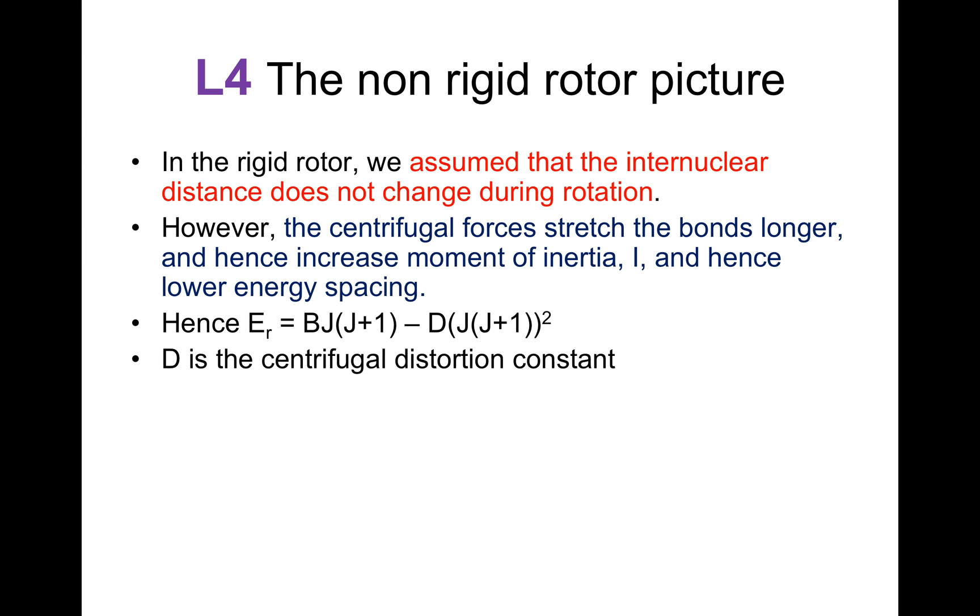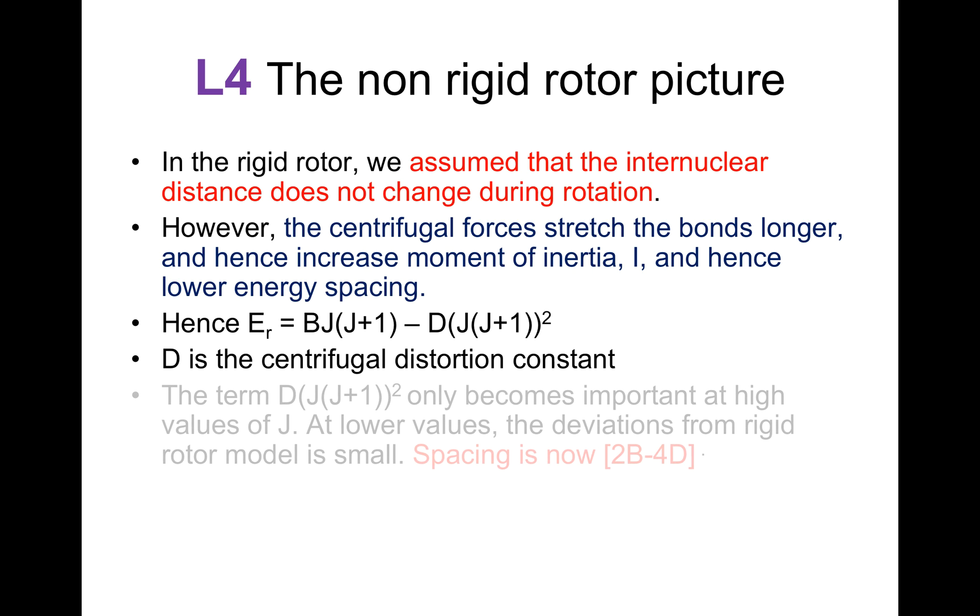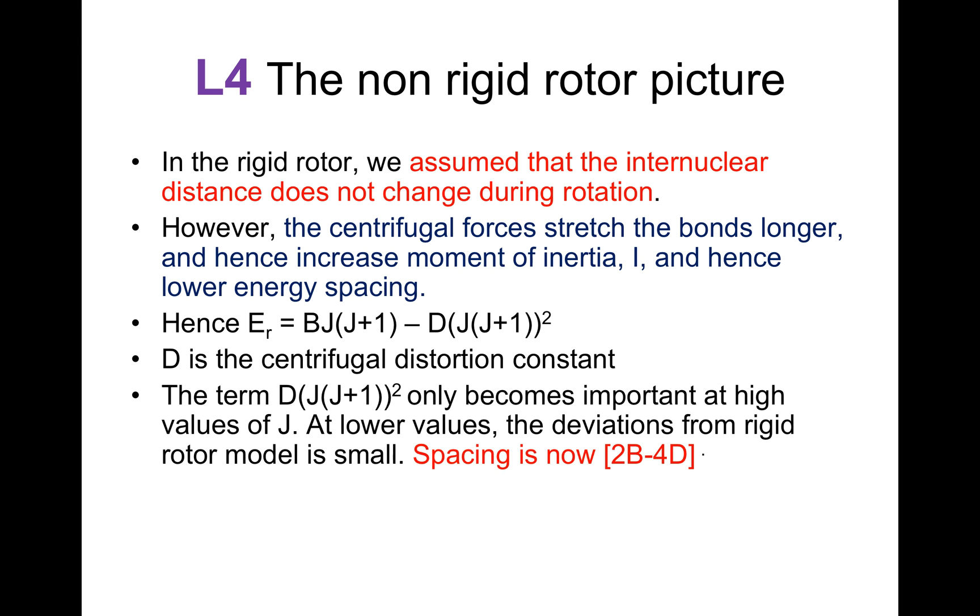D is the centrifugal distortion constant. The term D*(J*(J+1))^2 only becomes important at high values of J.